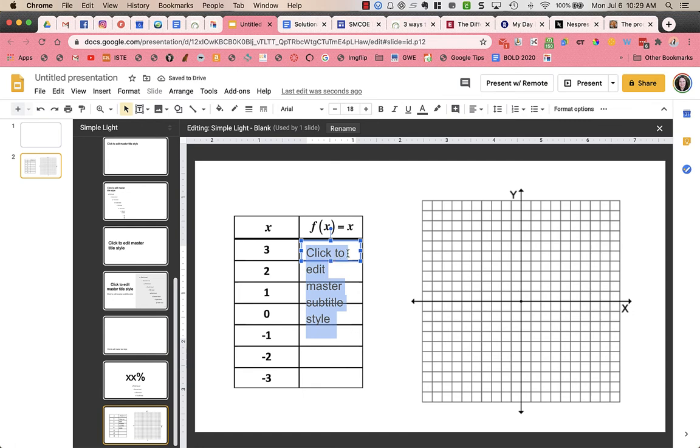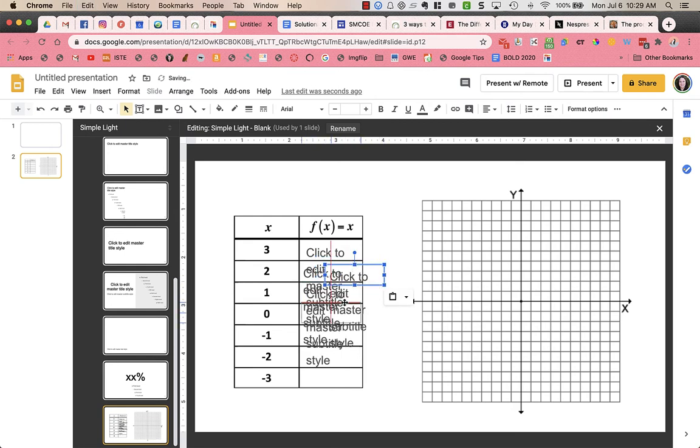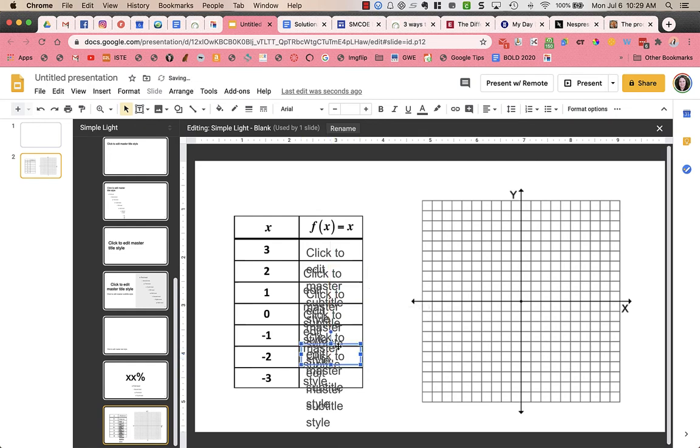Here it says click to edit master subtitle style. I'm going to leave that. And it has a bunch of text, but I'm going to copy that box, that blue box, and then paste it. I'm going to put it into the next one and into the next one. So I'm going to make this go into each of the boxes. It gets hard to see because all the text is overlapping over each other. But I now have boxes for subtitles on each of the boxes where students would type in the number.